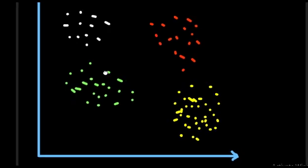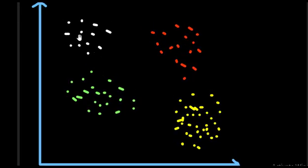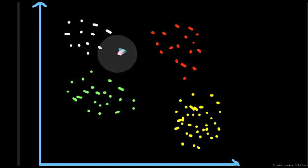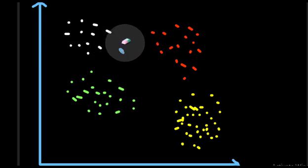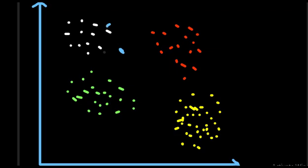Here is an example of classifying data. We have one class shown in white, another in red, then green, and yellow. Suppose we are given a new point lying at a particular position. If we observe this point, it is more closer to the white class than the others. If we take the five nearest neighbors, those nearest points are closer to this new point.